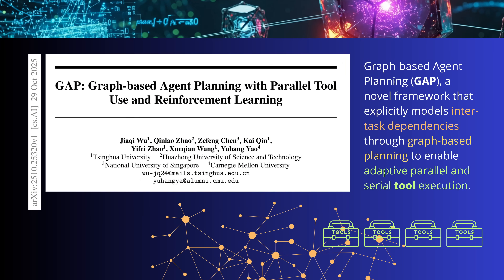Today's paper is from Tsinghua University, Huazhong University of Science and Technology, National University of Singapore, and Carnegie Mellon University. They present a new graph-based agent planning framework called GAP — a novel network that models inter-task dependencies through graph-based planning to enable adaptive parallel and serial tool execution.